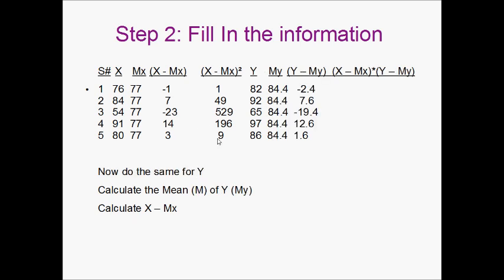We're going to do pretty much the same thing over here to Y. So we're going to go with the mean of Y. 82 plus 92 plus 65 plus 97 plus 86 divided by 5 is 84.4. We're going to put that next to all five of them.